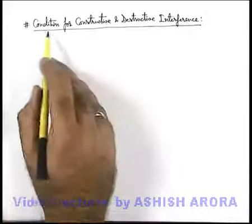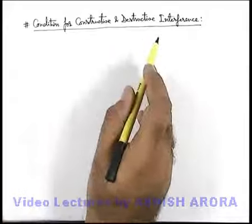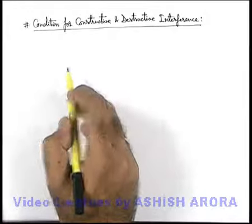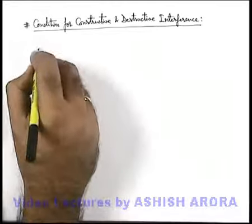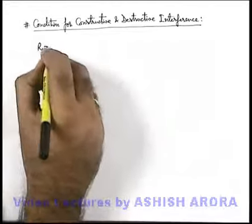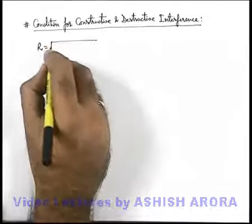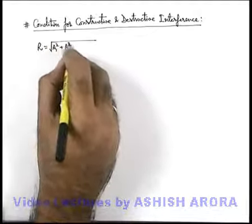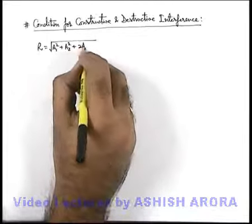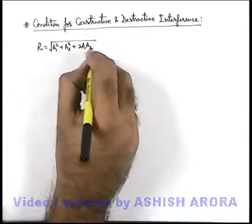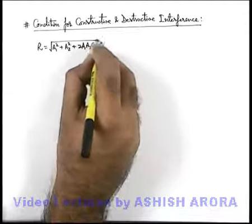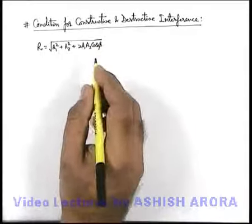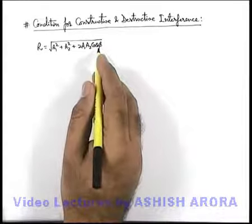Let us discuss the conditions for constructive and destructive interference. As we already know, when two waves superpose, the resulting amplitude is given as the square root of a₁² + a₂² + 2a₁a₂cosφ, where a₁ and a₂ are the amplitudes of the component waves and φ is the phase difference between them.